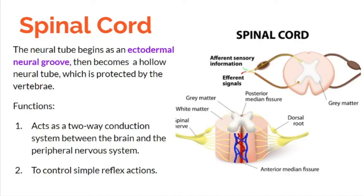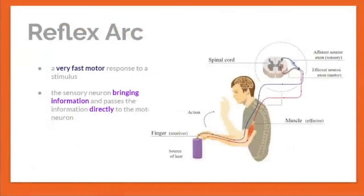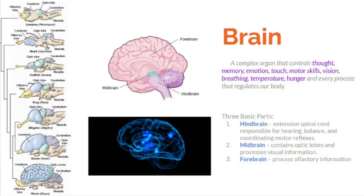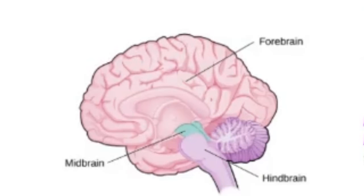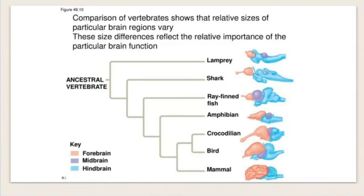The spinal cord is a neural tube that begins as an ectodermal neural groove, then becomes a hollow neural tube protected by the vertebrae. Its function is to act as a two-way conductor between the brain and the peripheral nervous system and to control simple reflex actions. The brain is a complex organ that controls thought, memory, motion, touch, motor skills, vision, breathing, temperature, hunger, and every process that regulates our body. There are three basic parts: the hindbrain, the midbrain, and the forebrain.